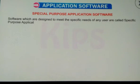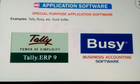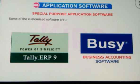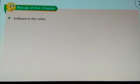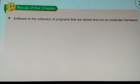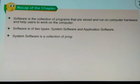Let us quickly glance through the key points discussed in this chapter. Software is the collection of programs that are stored and run on computer hardware and help users to work on the computer. Software is of two types: System Software and Application Software. System Software is a collection of programs that control the overall operations of a computer and its devices. Utility programs perform specific tasks usually related to managing the computer, its devices or its programs. Application Software are sets of programs developed by programmers in order to perform specific types of jobs.